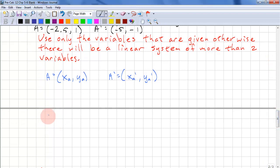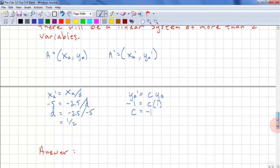We have a equal to (x_a, y_a) and a prime equal to (x_a', y_a'). We have x_a' equals x_a over d. So negative 5 equals negative 2.5 over d. d equals negative 2.5 over negative 5, and that is 1/2. We have y_a' equals c times y_a. So negative 1 equals c times 1. So c equals negative 1.